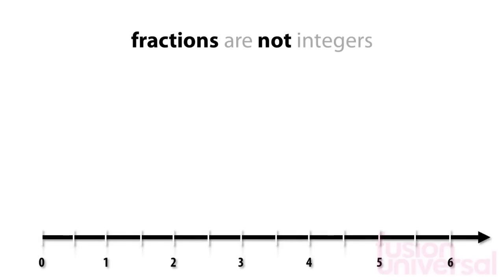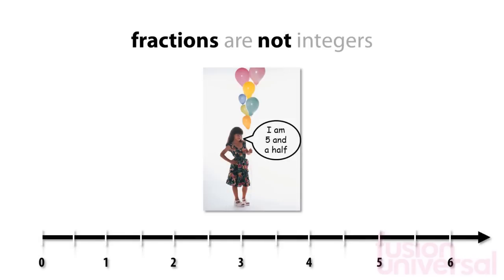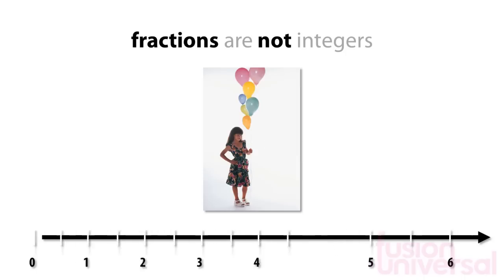Fractions are not integers. Your age is a good example of this. When you are young, you might prefer to say you are five-and-a-half years old rather than just five years old. This is because you are between your fifth and sixth birthday.